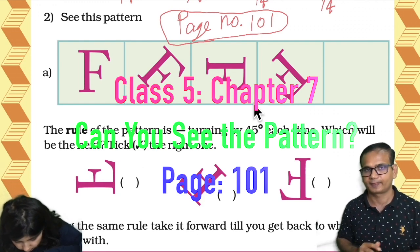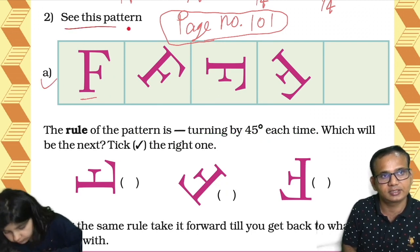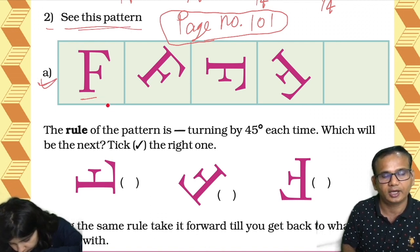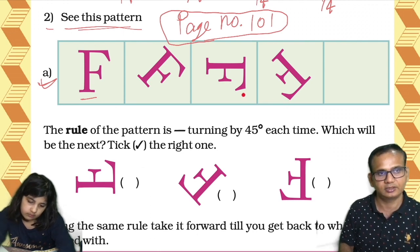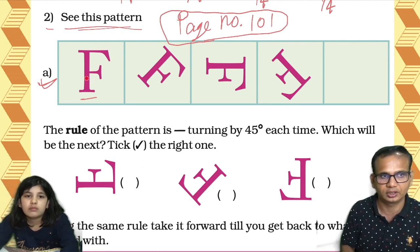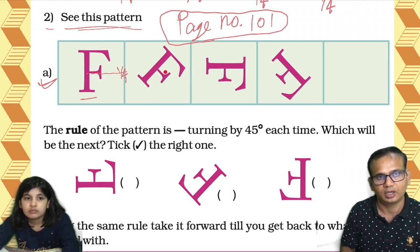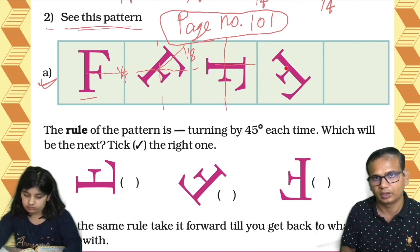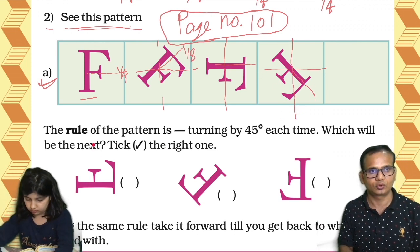Shall we start, Avisha? Without wasting time — she's telling yes. So, see this pattern. We are seeing it, and then this is the letter F, and then it is turned this side, and then again it's turned this side, and again it is turned this side. Just see here — it's taking a one-eighth turn, a quarter, and then half of the quarter — one-eighth you can say.